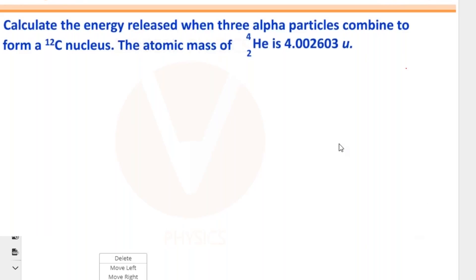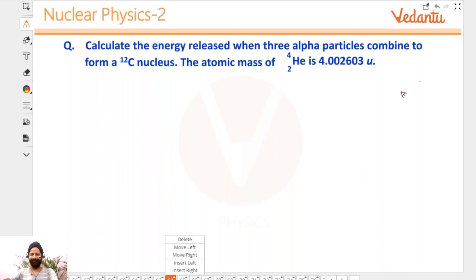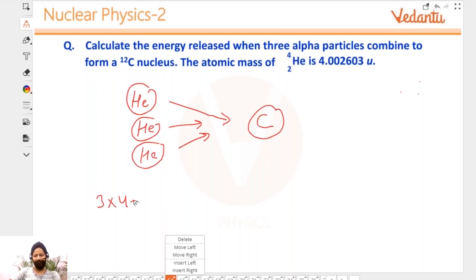Let's see what we have to do. Let's try to understand first. What's happening here? There is a helium, another helium, another helium. Three of these are combining. These three combine to give you a carbon. So how much mass defect is going to be equal to the change in energy, converted to energy. You had three times 4.002603. This is what you had.